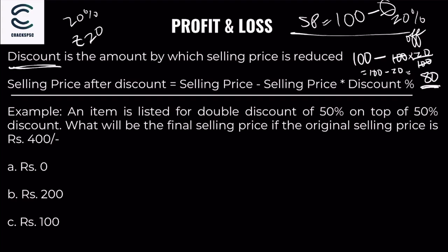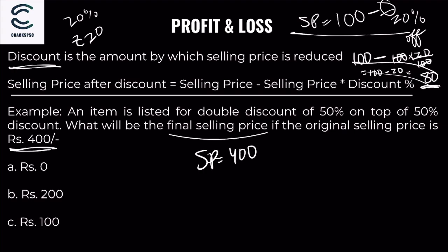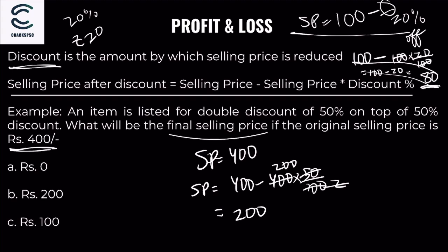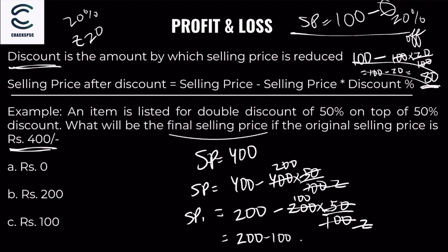Let's apply this with an example. Suppose the original selling price is 400. After the first 50% discount, selling price becomes 400 minus 400 into 50/100, which equals 200. Then applying the second 50% discount: 200 minus 200 into 50/100 equals 100. So the final selling price is 100.